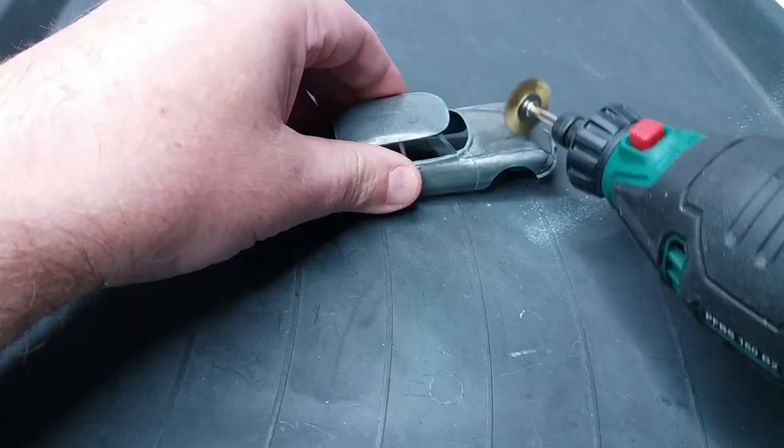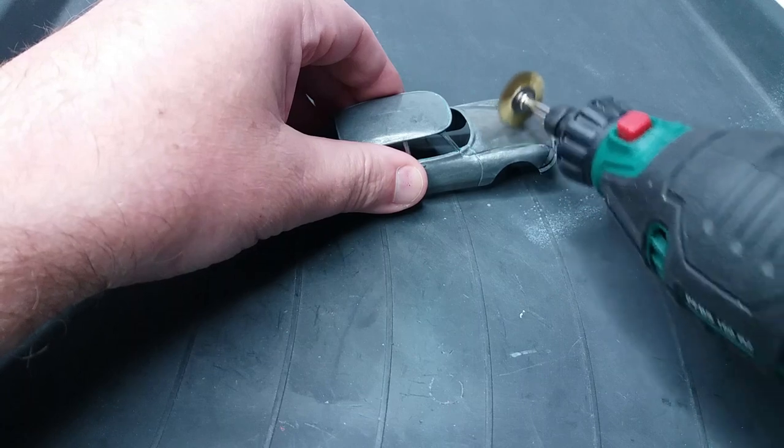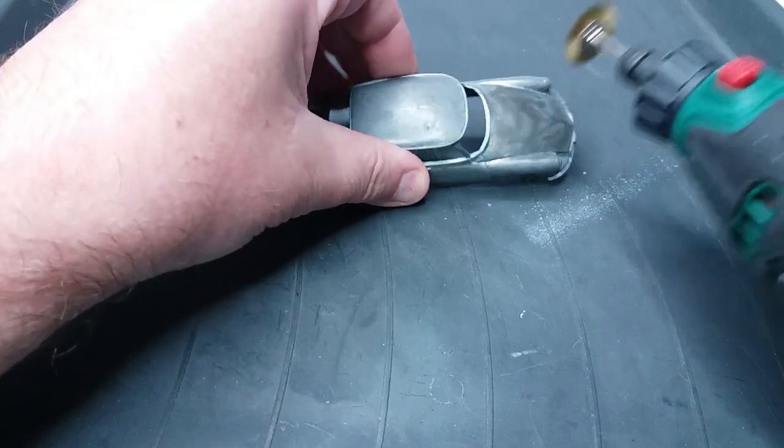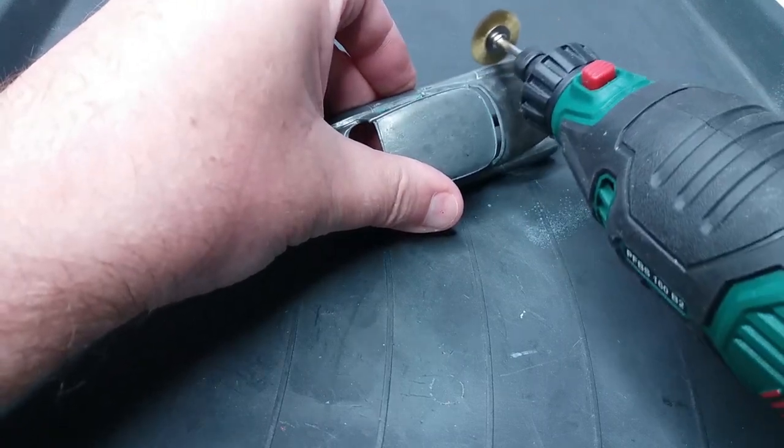So now I'm just going to use a wire wheel on the rotary tool from Lidl and not sponsored I swear. I'm just going to use that to polish up the casting and just remove any last little bits of paint that's stuck in crevices.